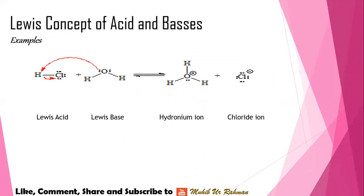The first example is the reaction between hydrochloric acid and water to form a hydrogen ion and a chloride ion. In water, there are two lone pairs of electrons. So, H₂O acts as a Lewis base here. In HCl, chlorine is highly electronegative, and the shared electrons between H and Cl are attracted toward chlorine, which accepts the pair of electrons.